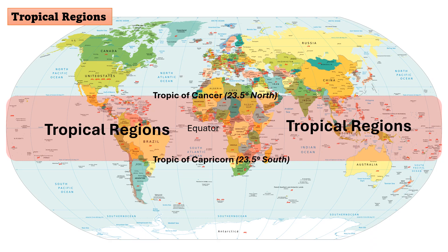What is the meaning of the tropical regions? The tropical regions, also known as the tropics, is the region of Earth surrounding the equator.